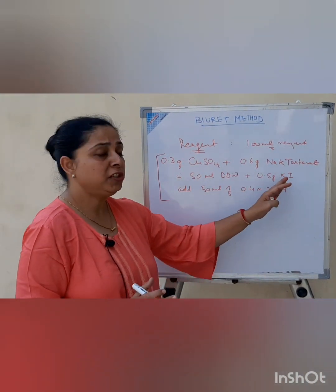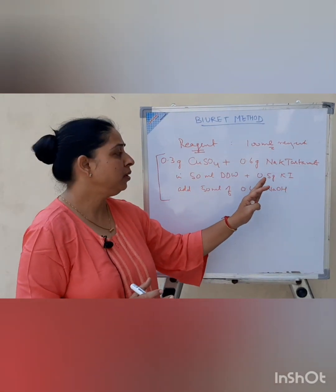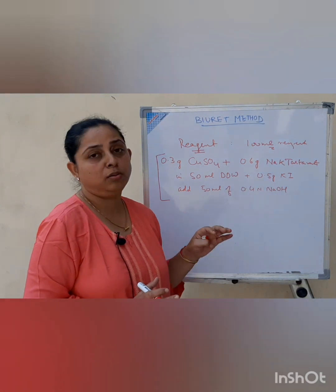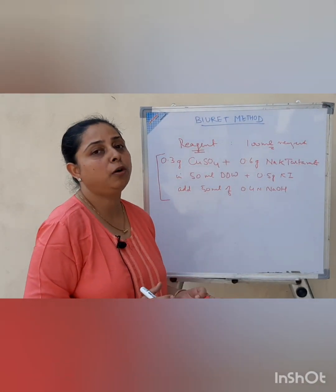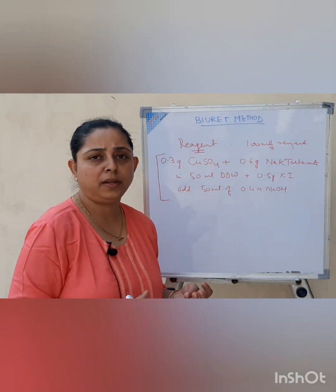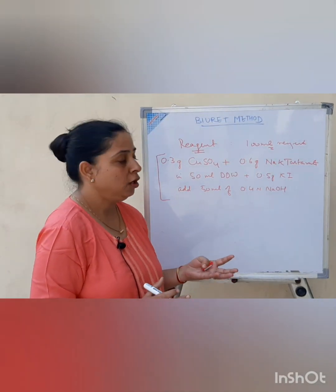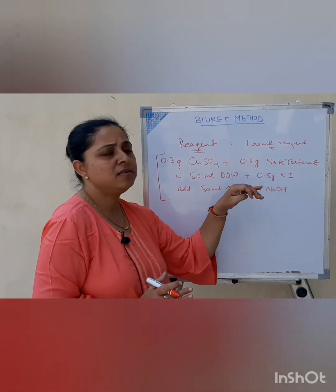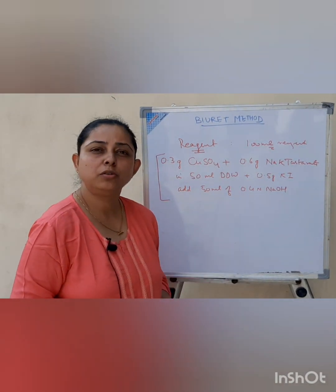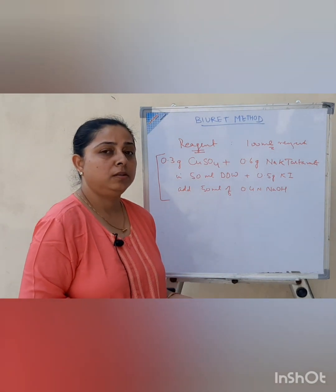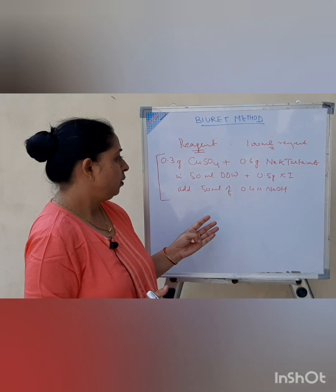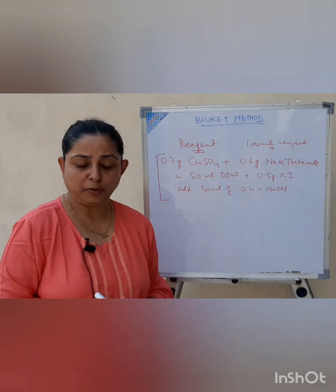Potassium iodide is also added. The function of potassium iodide is that it prevents the precipitation of copper, prevents auto-oxidation of copper and formation of precipitates. So basically, potassium iodide is used for the preservation of the biuret reagent for a longer time. So that was about the reagent preparation.